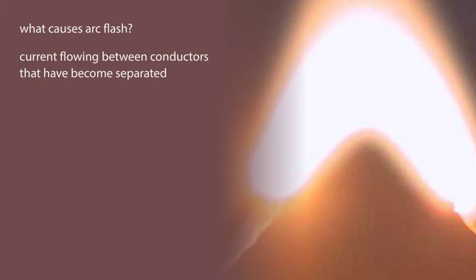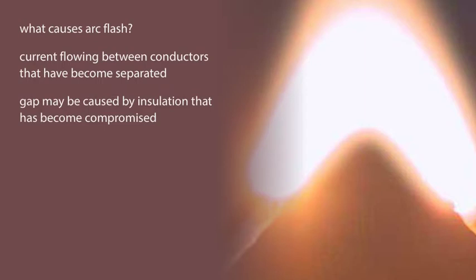Do you know what causes an arc flash? An arc, or crossing of electrical current across a gap, is caused by current flowing between conductors that have become separated. This gap may be caused by insulation that has become compromised.